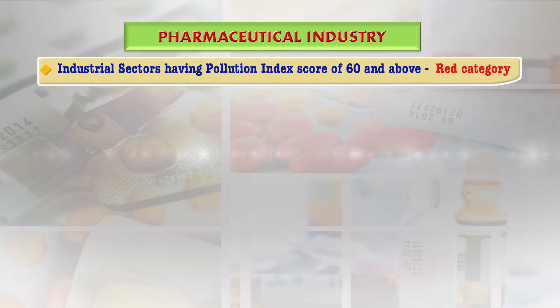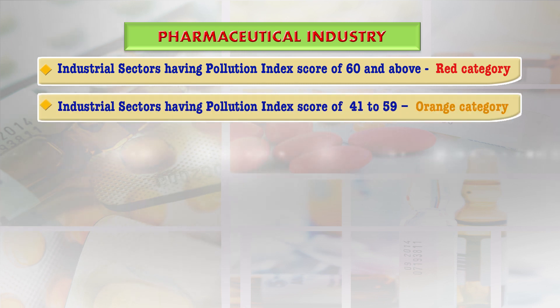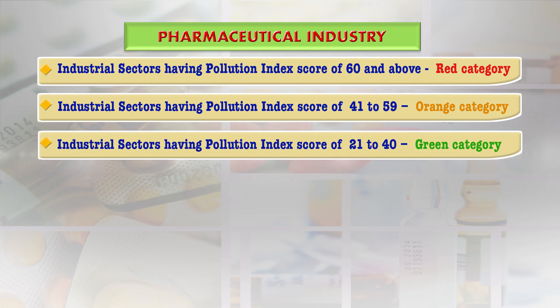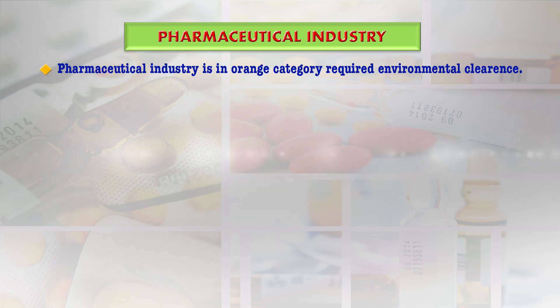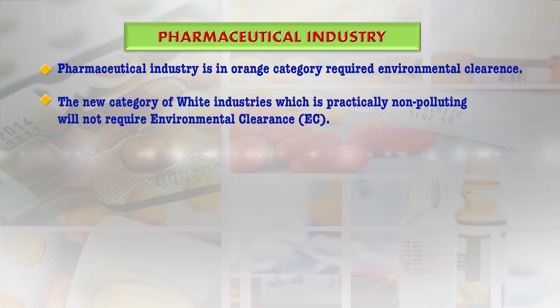Once a standardized set of standards is in place, execution becomes very easy. Industrial sectors with a Pollution Index score of 60 and above are categorized as Red. Those with a score of 41 to 59 fall in the Orange category, 21 to 40 is Green, and up to 20 is the White category. The pharmaceutical industry falls in the Orange category, which requires environmental clearance. Industries in the White category are practically non-pollutant and require no environmental clearance.